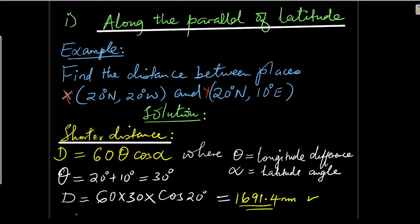We start with the shortest distance along the parallel of latitudes. The parallel of latitudes — you can refer to this distance as distance along the small circle. We are going to use this example: find the distance between places X, which is 20 degrees north, 20 degrees west, and Y, 20 degrees north, 10 degrees east. These places X and Y are located along the small circle or along the parallel of latitude.